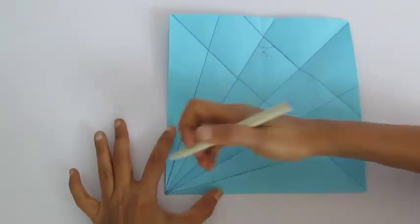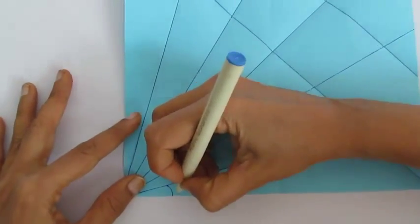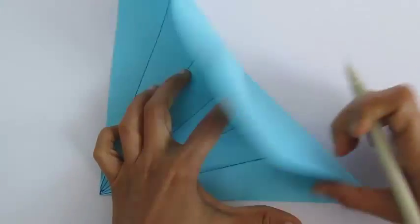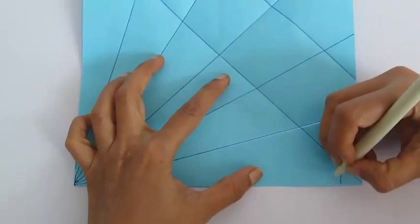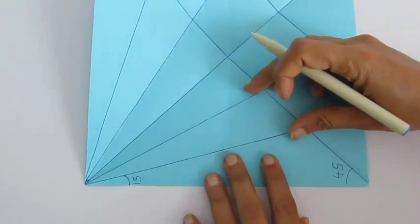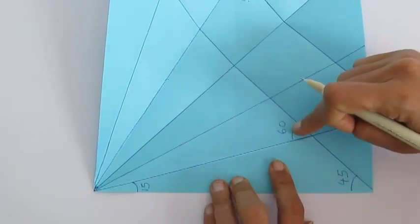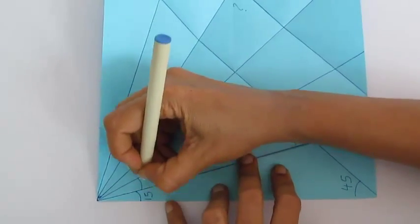So what is this angle? This is 15 degrees because we divide it into 6 equal parts. 90 divided by 6. This we folded along the diagonal so this is 45 degrees. Exterior angle of a triangle 45 plus 15 is 60 degrees.